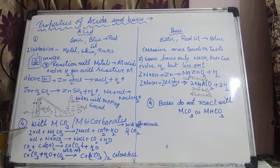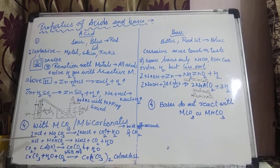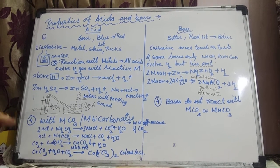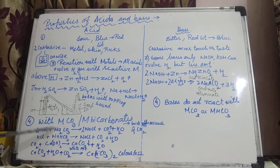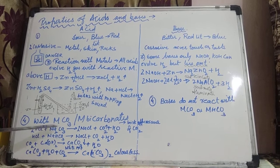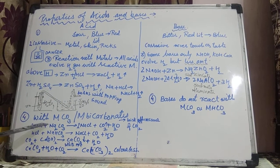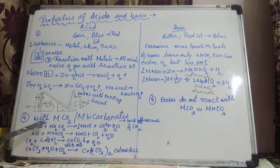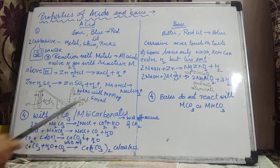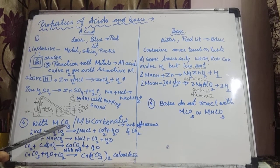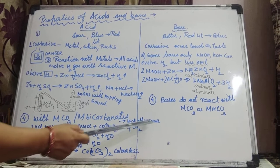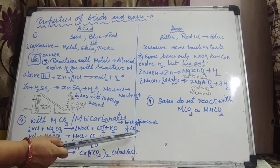The next reaction I am taking is very very important, and 100% sure this reaction can be asked in the board exam because it will be covered in two chapters. What is that reaction? Reaction of acid with metal carbonate or metal bicarbonate. Whenever acid reacts with metal carbonate or metal bicarbonate, brisk effervescence of CO₂ evolves out.